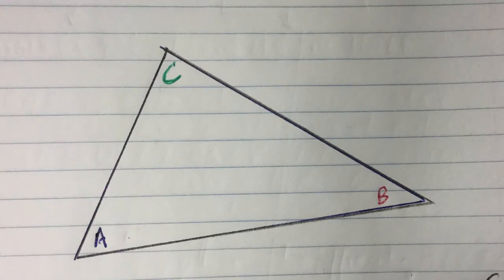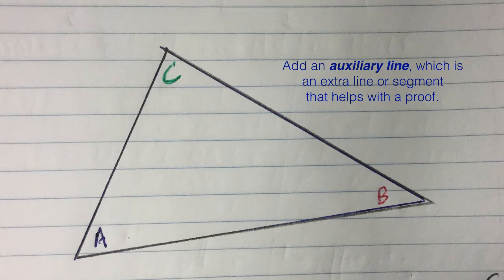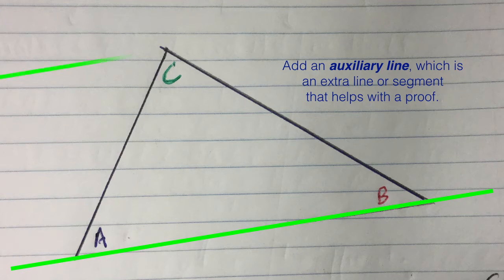Let's say we've got our triangle and we're going to add an auxiliary line. An auxiliary line is an extra line or a line segment that helps you prove a certain statement. So let's take a look at the bottom line segment AB. If we were to create a line parallel to that line through point C, that's going to be our auxiliary line, it's going to help us prove that this was true for any triangle.